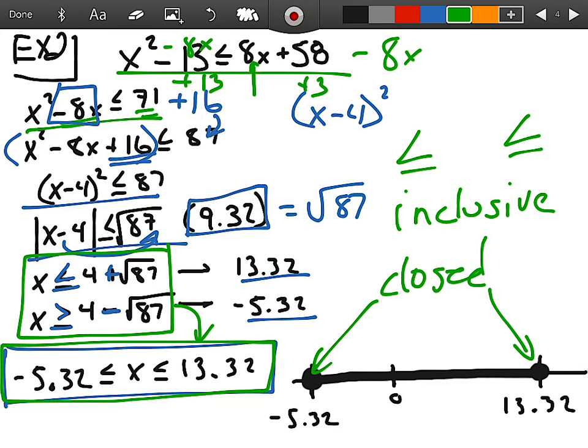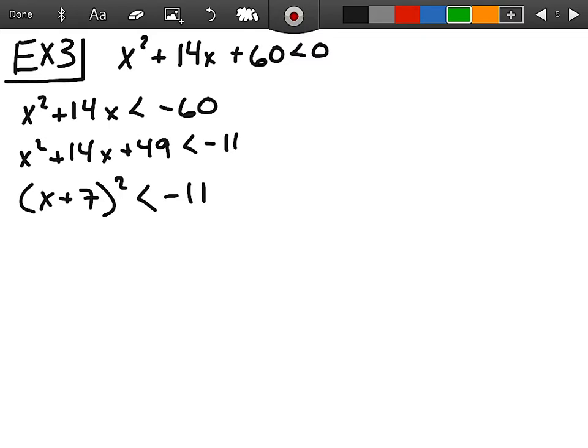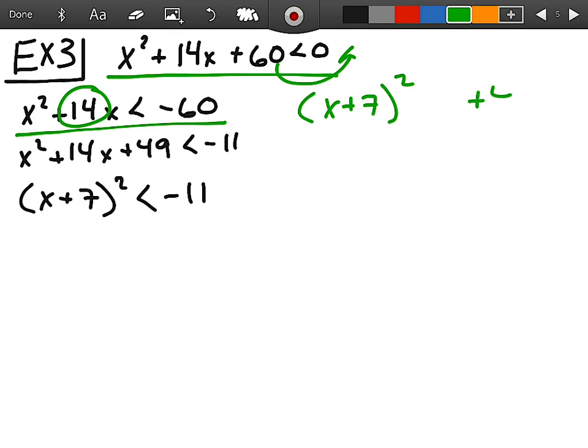Your last example here is x squared plus 14x plus 60 is less than zero. Move my 60 out. Subtract 60 from both sides. And I get my equation that's less than negative 60. I queue off on the 14x and realize that I'm after x plus 7 squared, which will generate a positive 49. And then, so I add 49 to both sides of the equation to get negative 11.